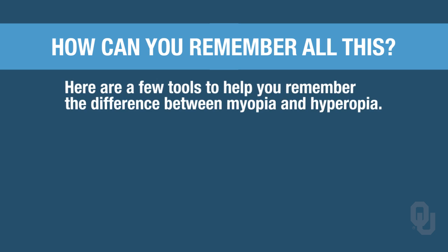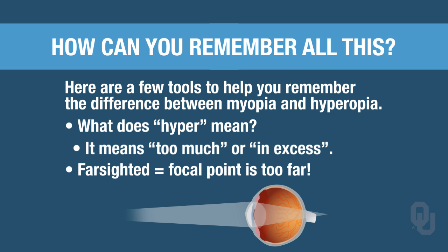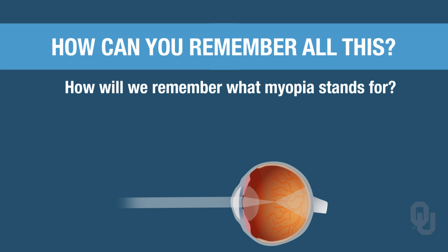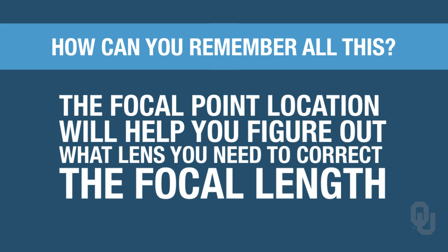Here are a couple of tools to help you remember this. 'Hyper' means too much or an excess — in hyperopia, the light rays go too far beyond, ending up behind the retina. Farsighted means the focal point is too far. For myopia, you're nearsighted, so your focal point is too short — near, in front of the retina. Let those words give you hints about where the focal point is. Once you know that, you'll know which lens to use based on whether you need to increase or shorten the focal length.